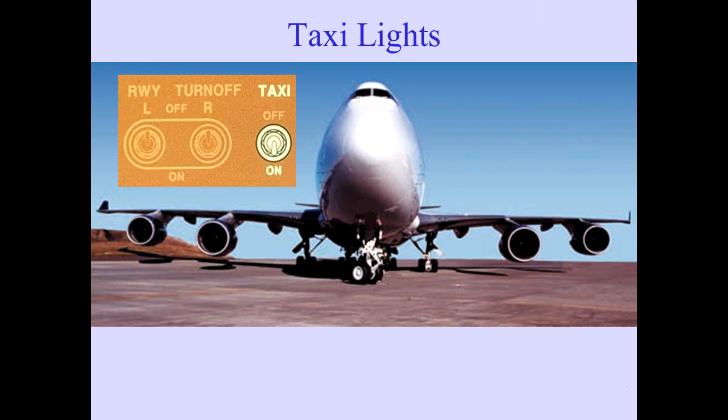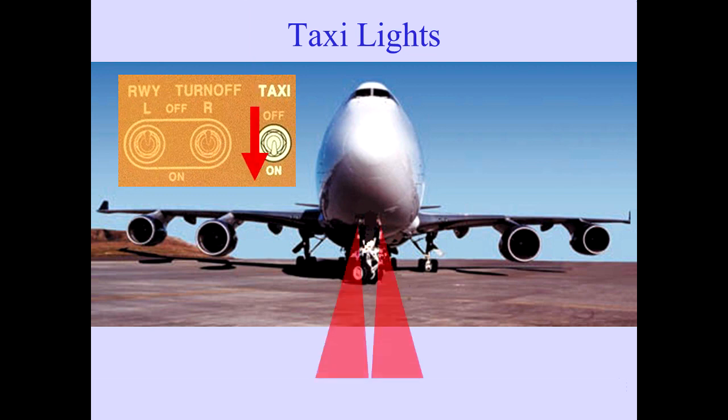The taxi lights switch on the overhead panel controls the taxi lights. Two taxi lights are located on the nose landing gear and illuminate only when the air-ground sensing system is in the ground mode and the taxi light switch is selected to on.